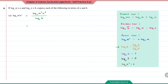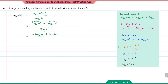For the numerator, using the product law: log base 2 of M squared plus log base 2 of N cubed. The denominator log base 2 of 4 is log base 2 of 2 squared, which equals 2. Using the power law, the numerator becomes 2 times log base 2 of M plus 3 times log base 2 of N. Since log base 2 of M equals A and log base 2 of N equals B, the final answer is (2A + 3B) over 2.